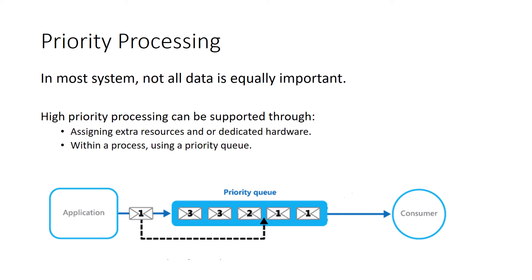Even within a process, some data can be given higher priority than other data. Consider using a priority queue — a queue where items are read from the queue in a specific order, as shown in the diagram. The highest priority items are read first. If you are using threads, be sure to use a priority blocking queue, which is thread safe.